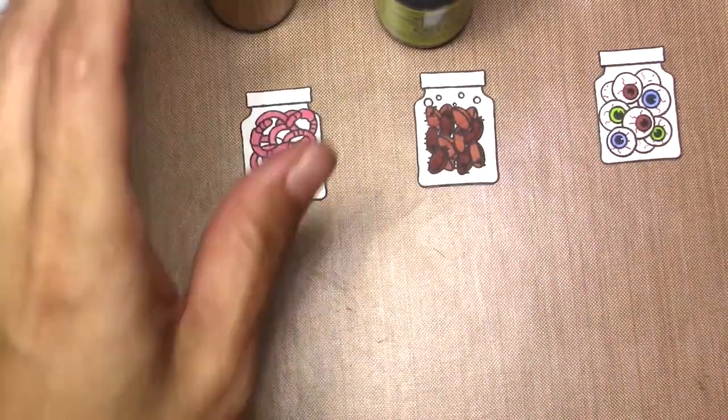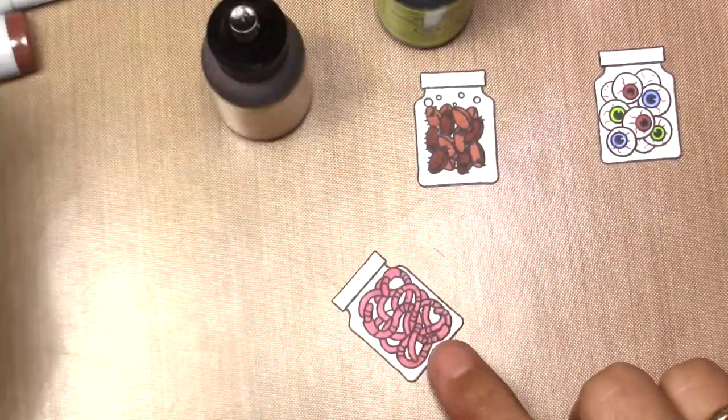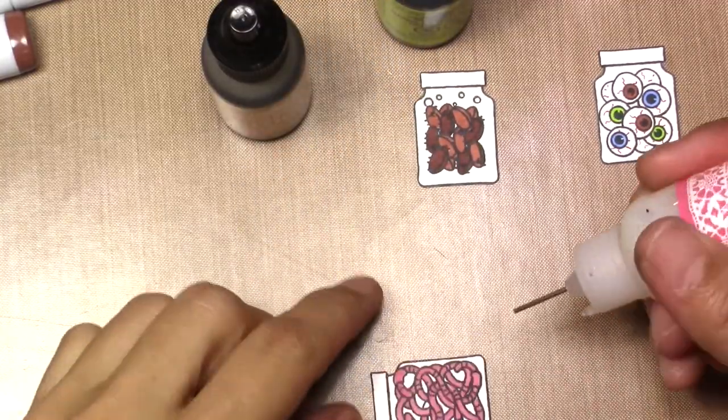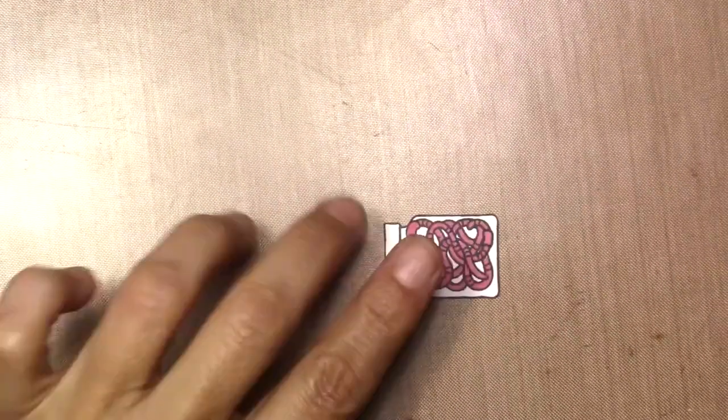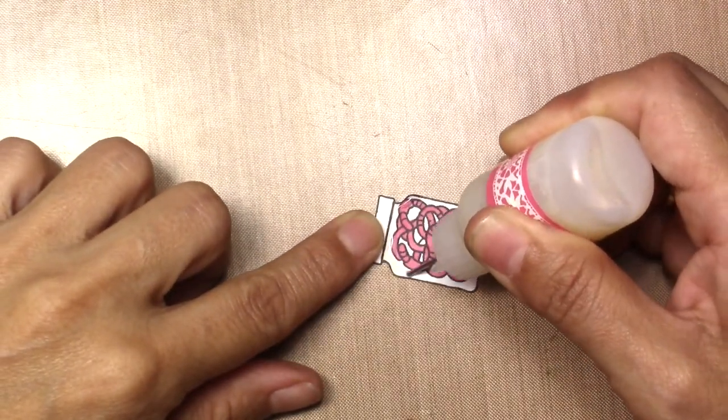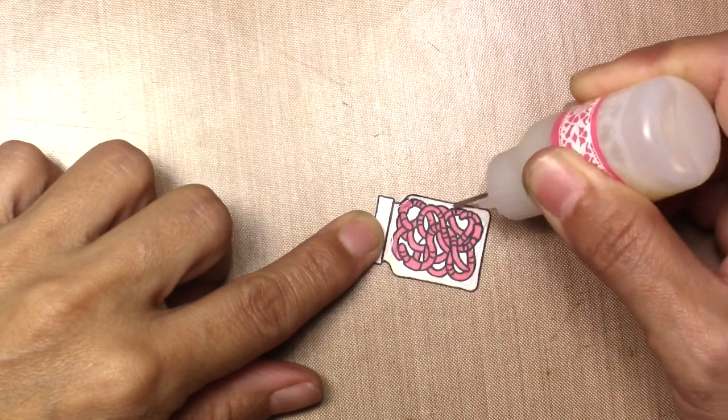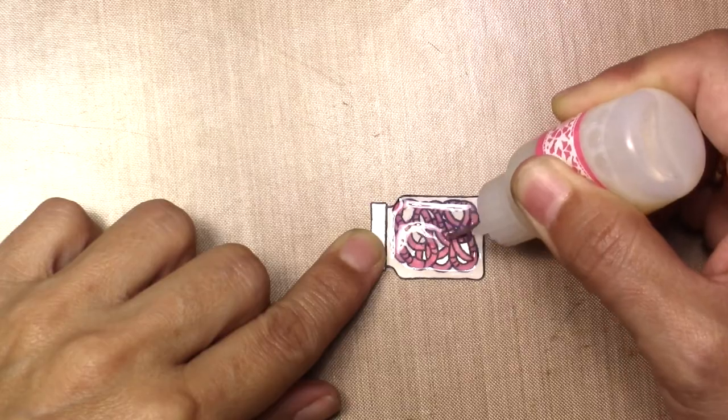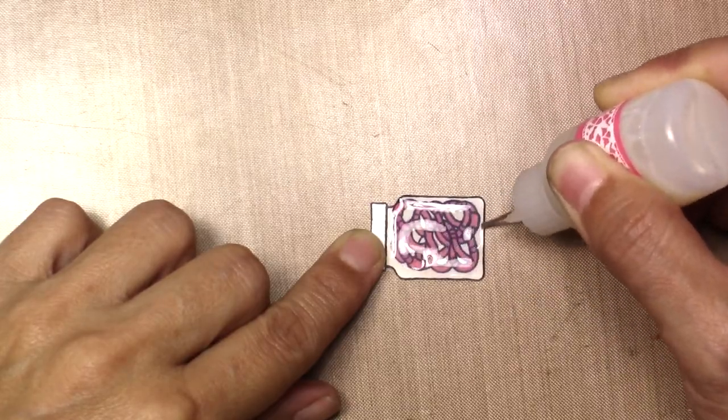After I finish coloring and cut them, I'm going to apply glossy accents. Immediately after I apply glossy accents, I will add a drop of alcohol ink, which is different color for every jar.